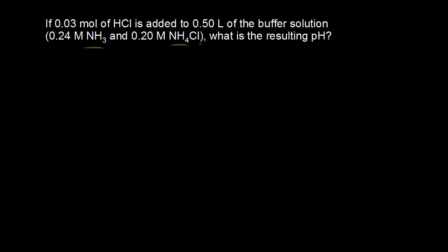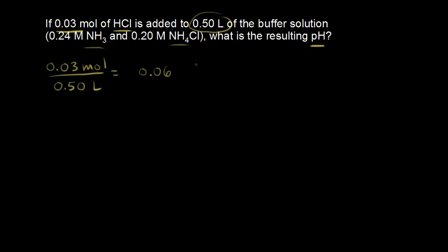We're still dealing with our buffer solution with ammonia and ammonium NH4 plus, but this time instead of adding base, we add acid. We add 0.03 moles of HCl, and the total volume is 0.50 liters. The concentration of HCl is 0.03 divided by 0.50, which equals 0.06 molar. Since HCl is a strong acid, 0.06 molar is the concentration of hydronium ions in solution.